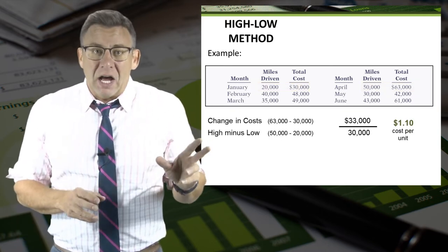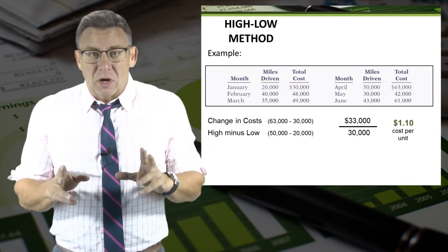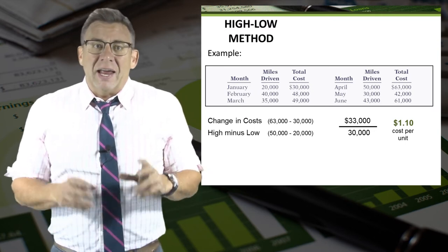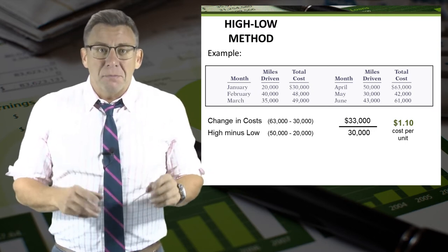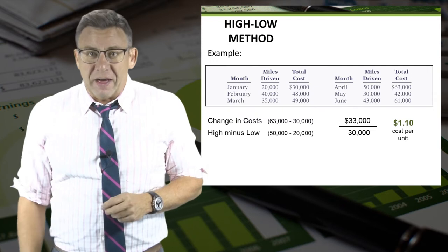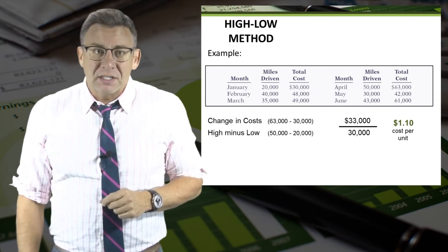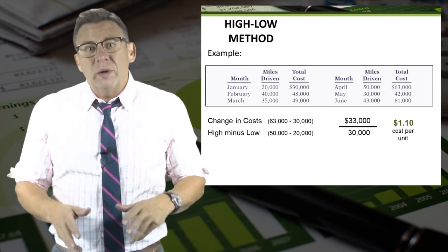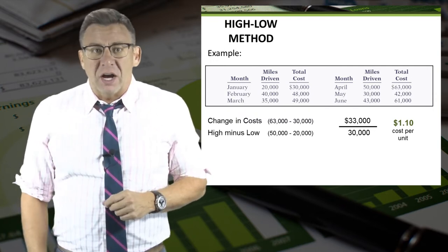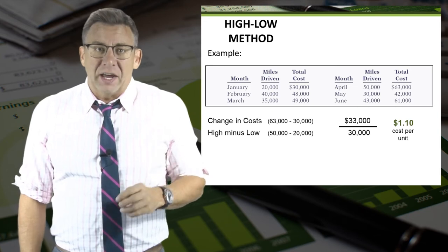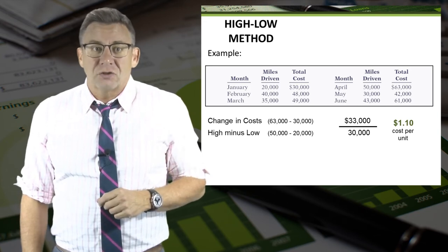High cost minus low cost is $33,000, and high volume minus low volume is 30,000 miles. When we divide the two, we get a variable cost per unit of $1.10 per mile driven.